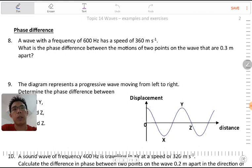Question number 8: A wave with a frequency of 600 Hz has a speed of 360 m/s. This is the V, we have the equation V equals F lambda. What is the phase difference between the motions of two points on the wave that are 0.3 meter apart?